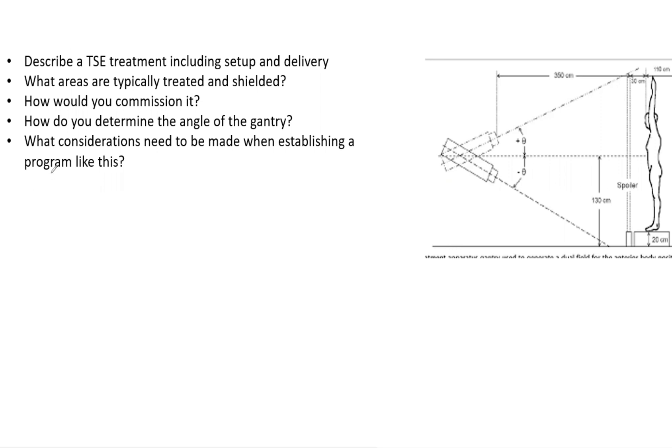For a TSE treatment, we typically use 2 to 9 MeV electrons. You want 1 cm depth of dose but don't want to go into the bone marrow. Ideally, you use a gantry angle—this will be dependent on your room and setup, but anywhere from 10 to 15 degrees is pretty normal. What that does is allow you